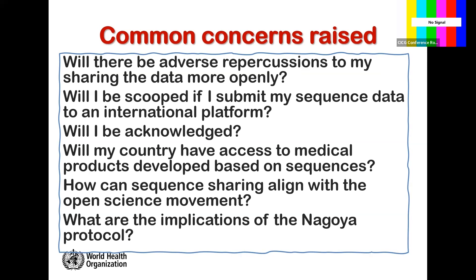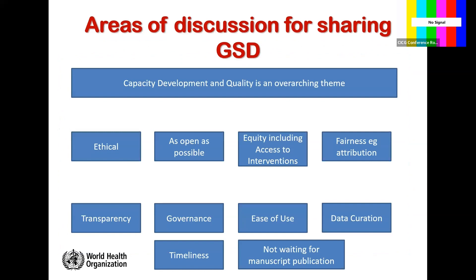From our discussions, a number of issues came out and can be grouped into various areas. Capacity development and the ability to generate high-quality sequence data is an overarching theme, along with ensuring ethical practice is followed, being as open as possible, equity, fairness, attribution, and other non-monetary benefits. We also found perhaps unexpected concerns — the ease of use of platforms for submission, support for data curation, and how the timing of sharing sequences relates to manuscript publication and academic credit all came up very frequently.